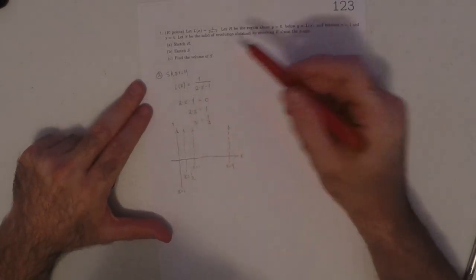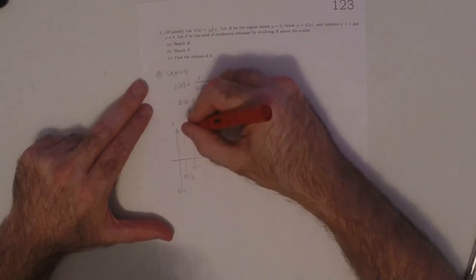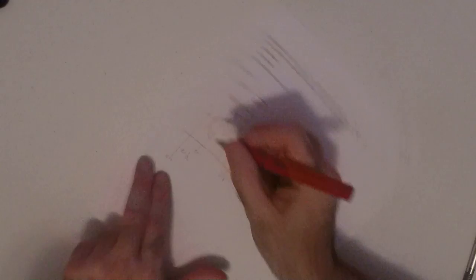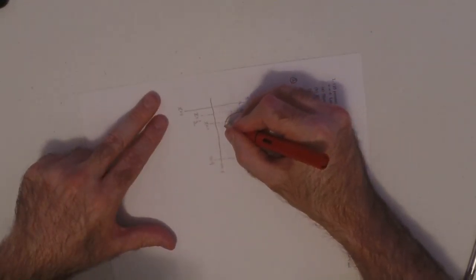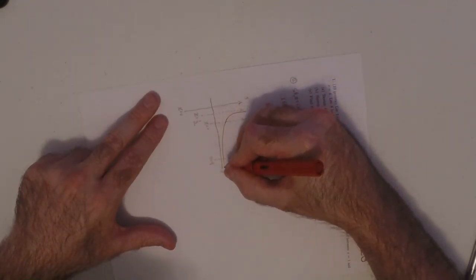So, at 1, its height would be 1. So then this is the asymptote. There's something like this, something like that.